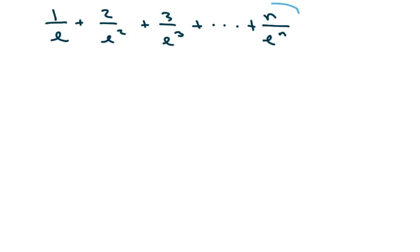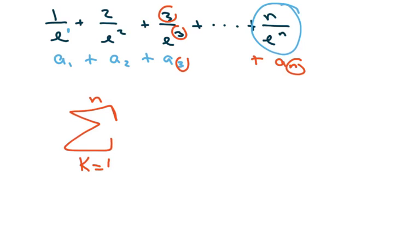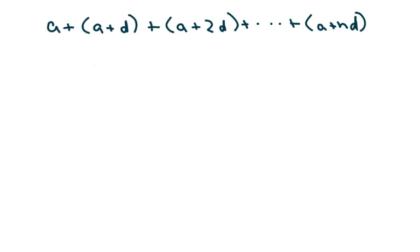This one — again I'm looking at this pattern. I can put a 1 here if you want and you see the pattern: a(1), a(2), a(3). Notice that these numbers all match, so we're going to end at a(n). Write k equals 1, ending at n, and we're going to write k over e to the k.